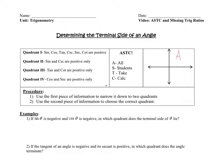A goes in the first quadrant, S goes in the second, T goes in the third, and C goes in the fourth. So what A stands for is 'all' — this means everything is positive. By everything I mean sine, cos, tan, cosecant, secant, and cotangent. Every single one of these six trig functions are positive in quadrant one.